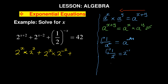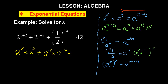The third law states: a to the power m, raised to the power n, equals a to the power of m times n. Using this, 2 to the power of negative 1, raised to the power of negative x, becomes 2 to the power of negative 1 times negative x, which equals 2 to the power of positive x, since a negative times a negative gives a positive.